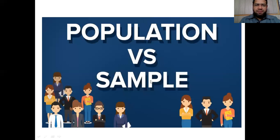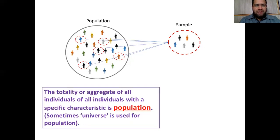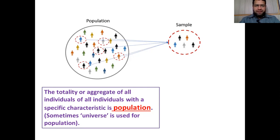First, let's make the distinction between population and sample. Population, as we have already discussed in lecture one, is the totality or aggregate of all individuals within a specific characteristic. For example, if we want to study something related to district Srinagar, the whole district Srinagar will be our population. Similarly, if we want to study the incidence of a particular disease or efficacy of a certain vaccine or drug in J&K, then whole J&K will be our population. Sometimes we use the word 'universe' for population.